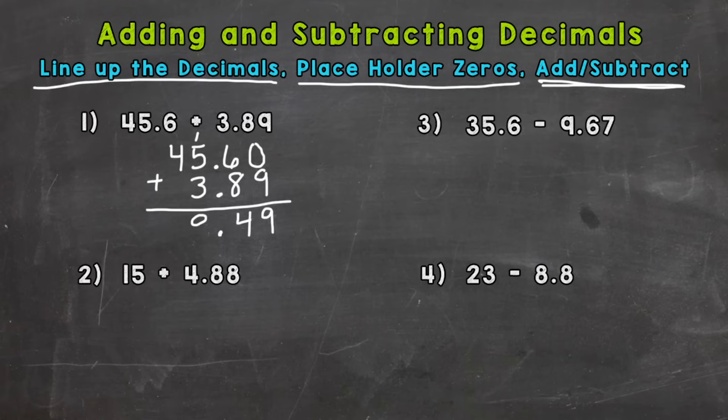Number 2, we have 15 plus 4 and 88 hundredths. So for a whole number we put the decimal right after it. Now we can line up 4 and 88 hundredths, and this is addition. So here the problem's offset like number 1, we had to use placeholder zeros. So for the 15 we can put a 0 in the tenths and a 0 in the hundredths. Now we're all lined up and ready to add.